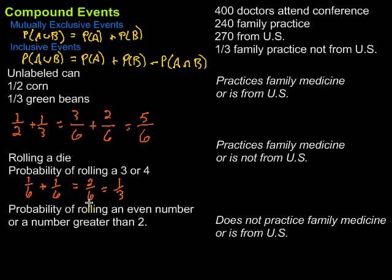Now: the probability of rolling an even number or a number greater than two. Let's find the probability of each. Even numbers on a die are two, four, six — that's three out of six. Numbers greater than two are three, four, five, six — that's four out of six. Notice that three plus four equals seven out of six, which is greater than one, signaling there's overlap we need to address.